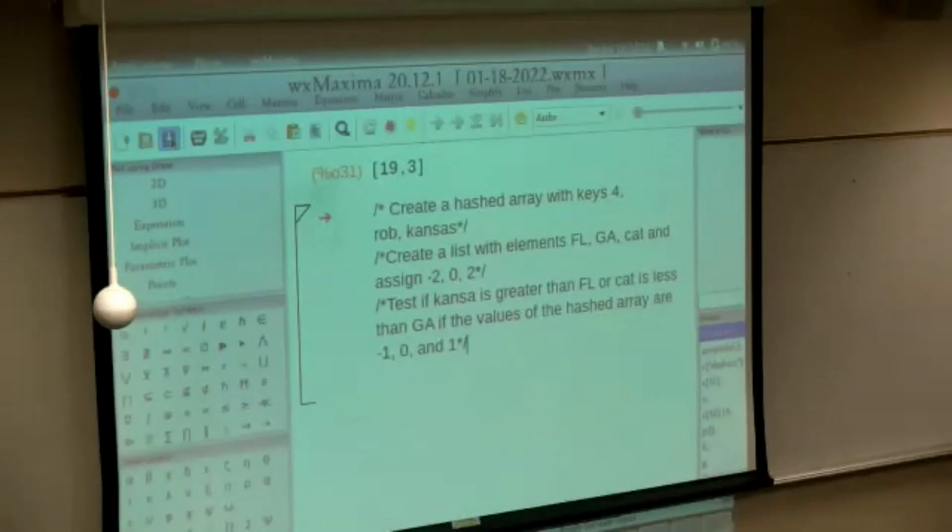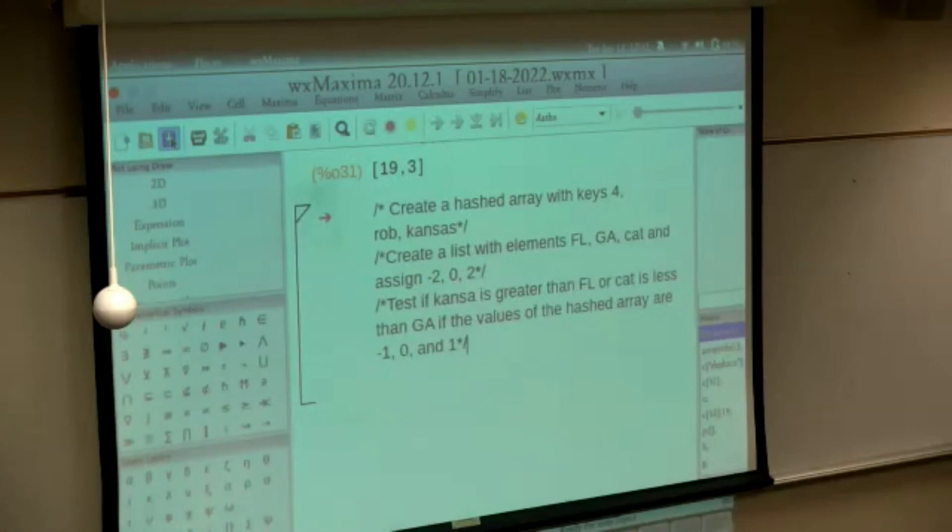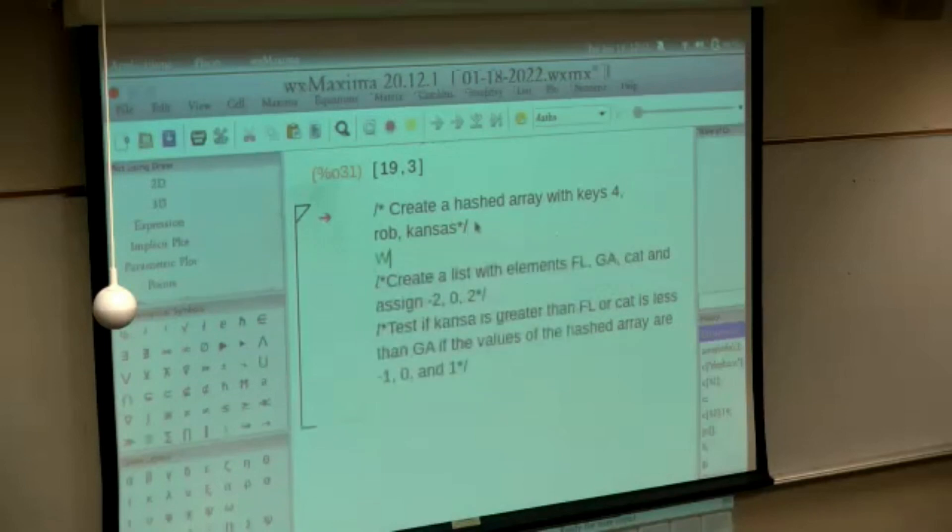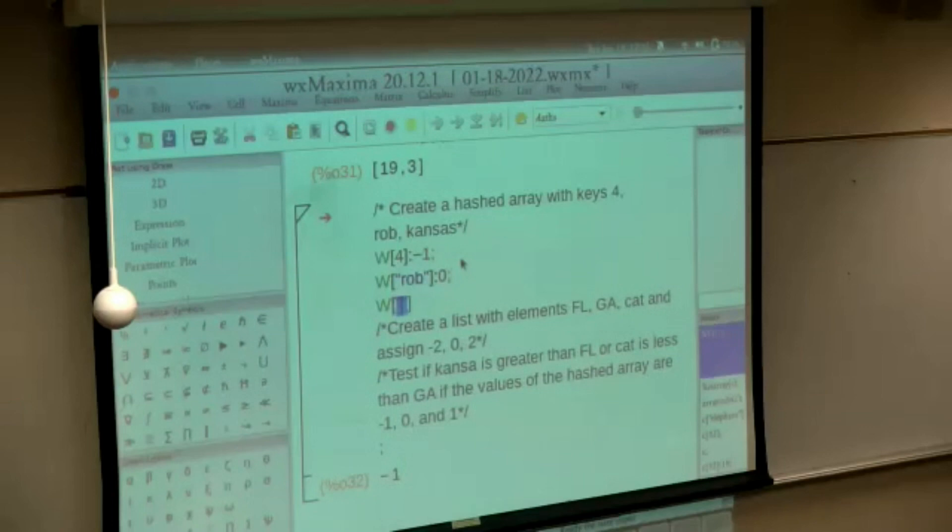Okay, so we want to create a hashed array with keys for Rob and Kansas. Call it w and assign the values minus one, zero, and one. So w of four minus one, and w of frog, and zero w of Kansas.